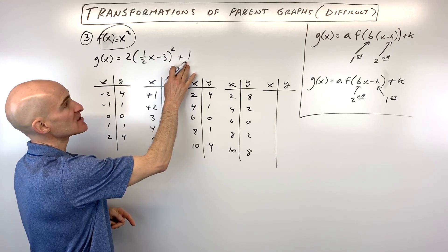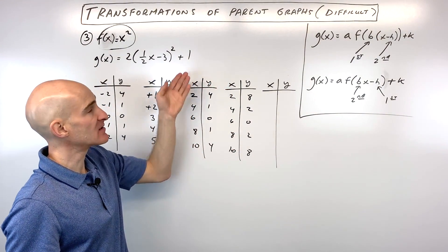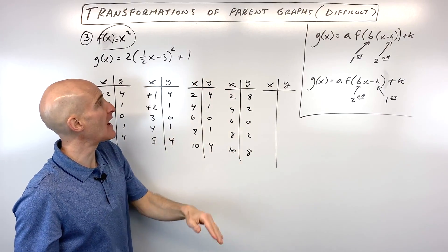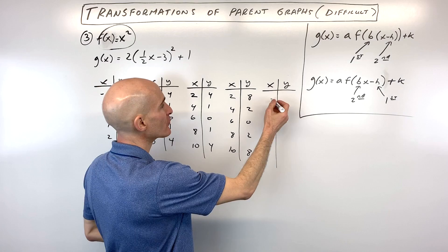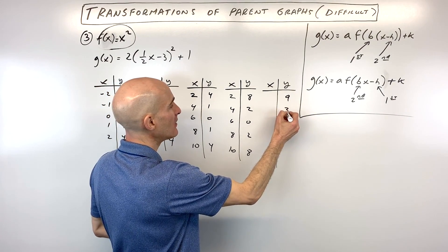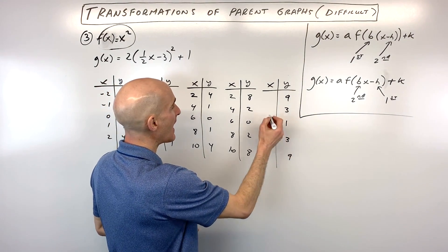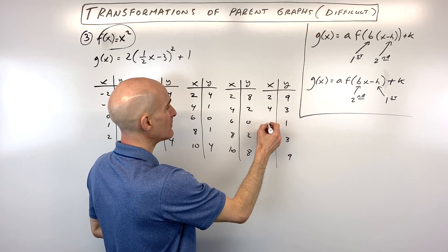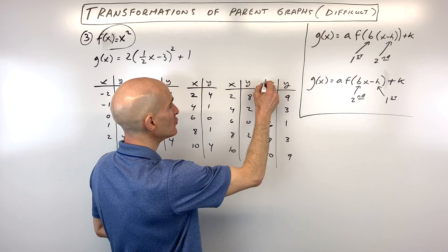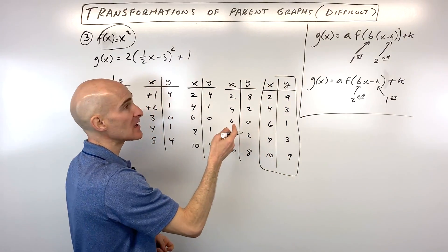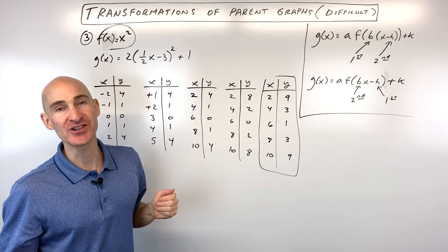Finally, the k value of +1 shifts everything up 1, so we add 1 to all y-values: they become 9, 3, 1, 3, 9. The x-values remain 2, 4, 6, 8, 10. Plot those points and you have the fully transformed quadratic function.